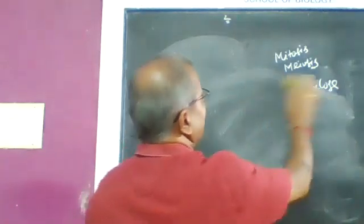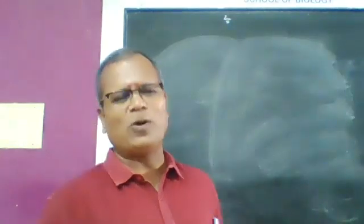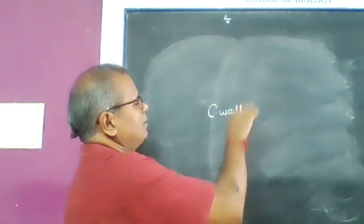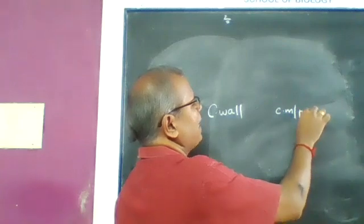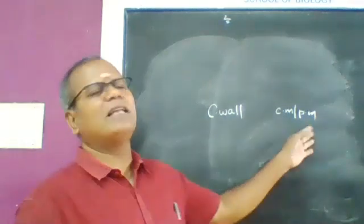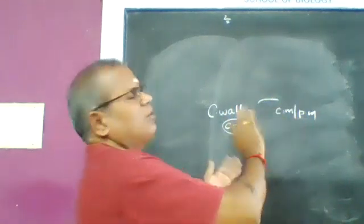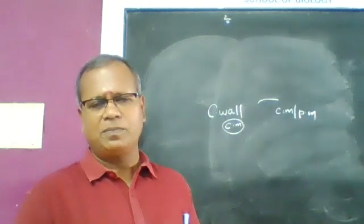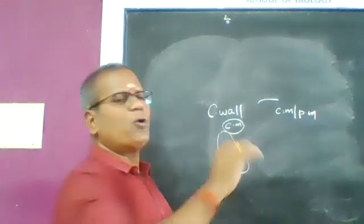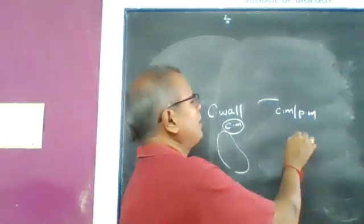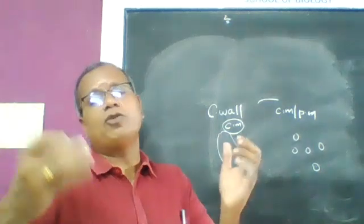Regarding eukaryotic cells — plant cell vs animal cell differences: the plant cell wall is made up of cellulose, while in animal cells the cell wall is absent and only the cell membrane (plasma membrane or biological membrane) is present. In plant cells, vacuoles are larger in size, while in animal cells, vacuoles are smaller and evenly distributed in the cytoplasm.